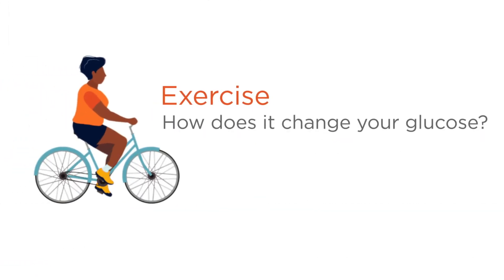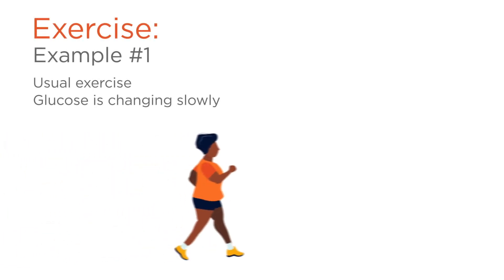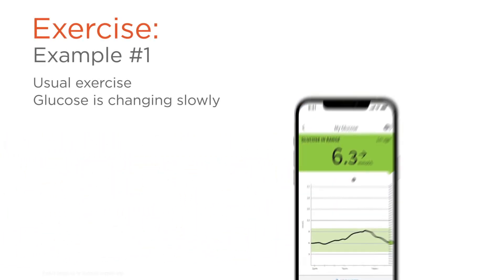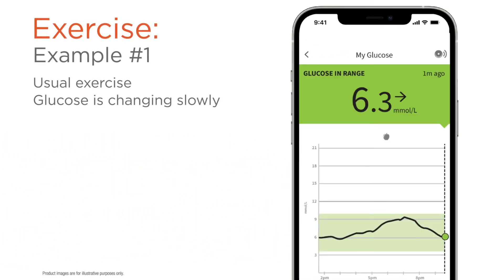Regular physical activity is part of diabetes self-management, but like carbohydrates, it can affect your readings. Let's say you walk daily for an hour after dinner. Here is what your scan could look like afterwards. Notice that your glucose came down, stayed in target range, and your trend arrow is steady.